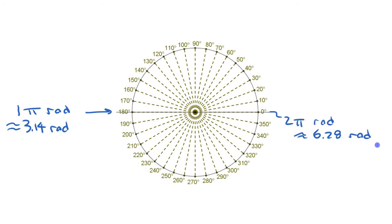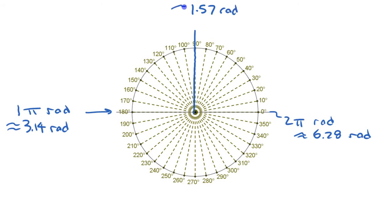Now, some of the other angles: if this is one pi, what's halfway to that? This is half of pi — you could say it's approximately 1.57 radians, or if you want to write it as an exact value, you can say it's one half pi, or pi divided by two.